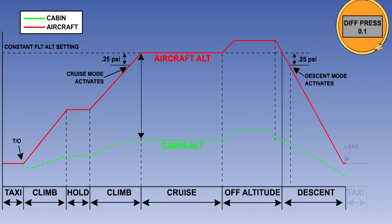When the controller senses that the aircraft is descending, it will switch back to proportional control and descend the cabin at a rate to produce a differential pressure of approximately 0.1 psi on touchdown. The descent rate will normally be about 300 feet per minute. When the aircraft lands and the ground-air logic system switches to ground mode, the outflow valves will slowly open fully to equalise cabin and ambient pressures.